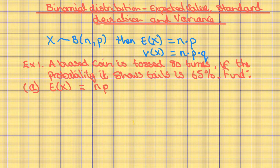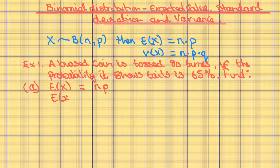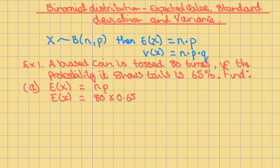In this case, the number of times the coin is tossed is 80. The probability that it shows a tail is 65%, which is equal to 0.65. So the expected value of X is equal to 80 times 0.65, which is equal to 52.